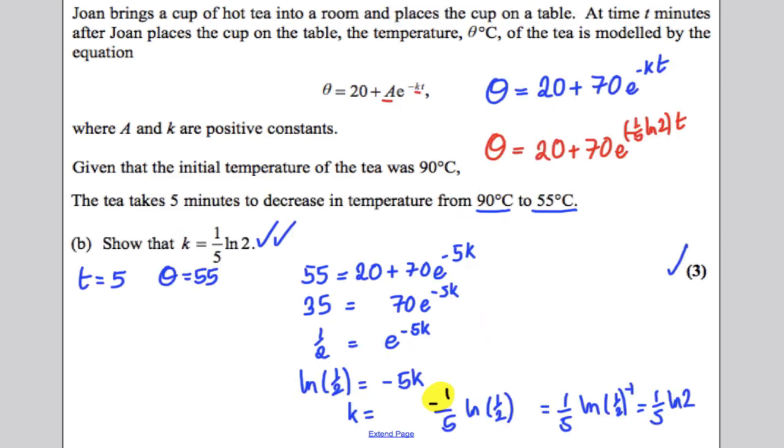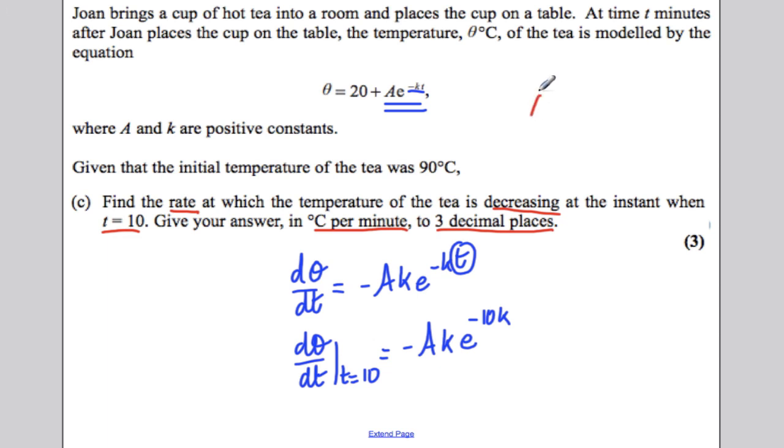All we've got to do is substitute our A and our K in that we've worked out previously. Now, remember going back here, A is 70, and K we worked out was a fifth ln 2. So, all we've got to do is substitute that in here. So, this would be equal to negative 70 multiplied by a fifth ln 2. That would be these multiplied. And then e to the negative 10 multiplied by a fifth ln 2.